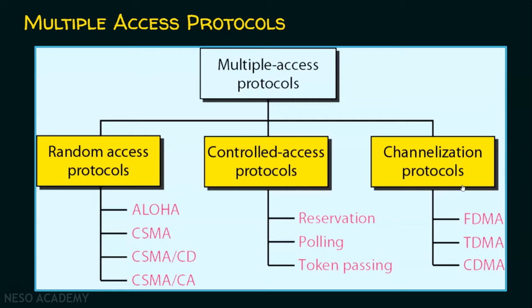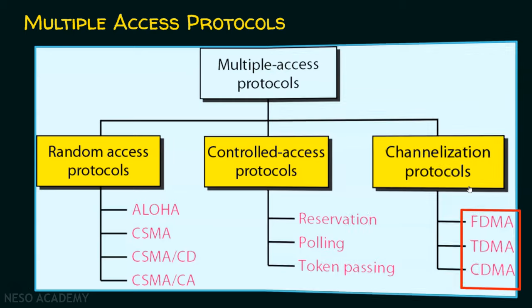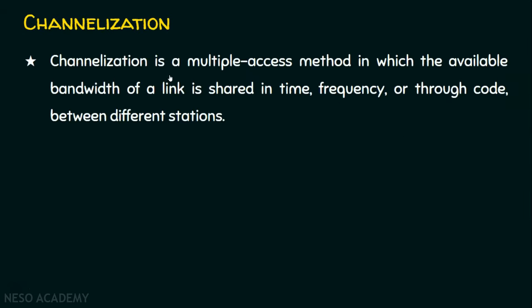And we are here in today's lecture. We will be talking about frequency division multiple access, time division multiple access, and code division multiple access. We will start with what is channelization. Channelization is a multiple access method in which the available bandwidth of a link is shared in terms of time, frequency, or through code between different stations.